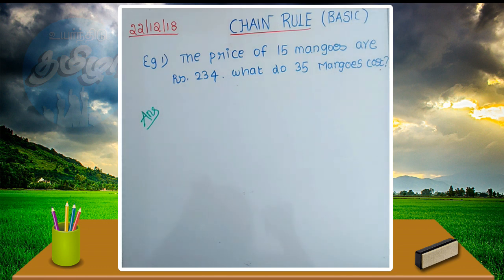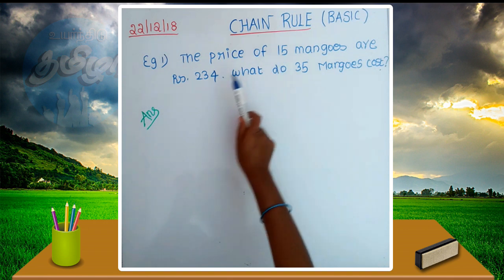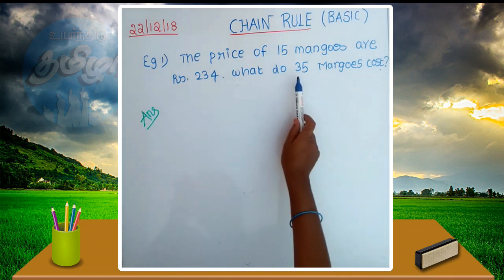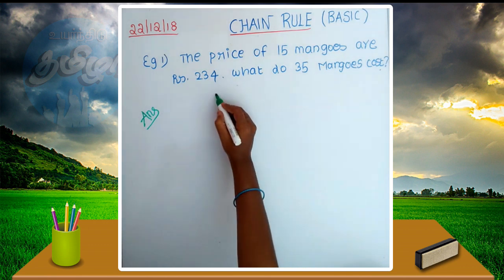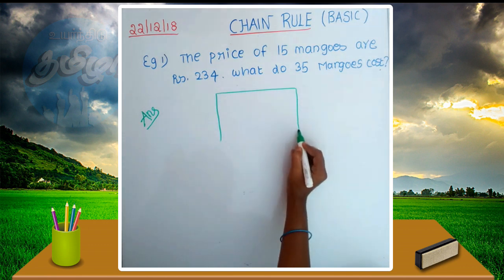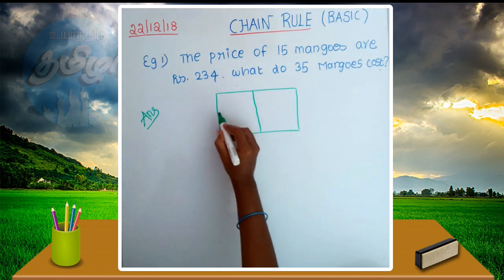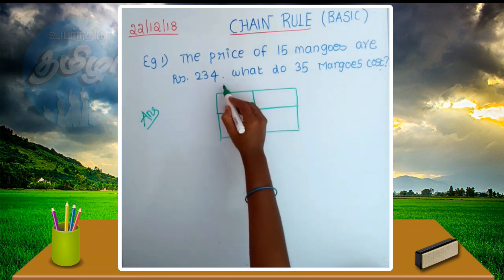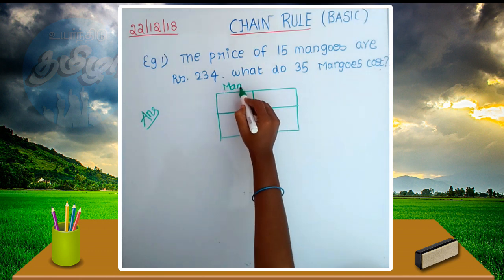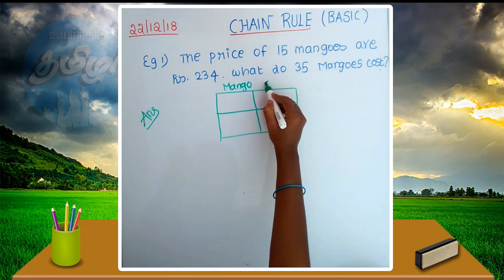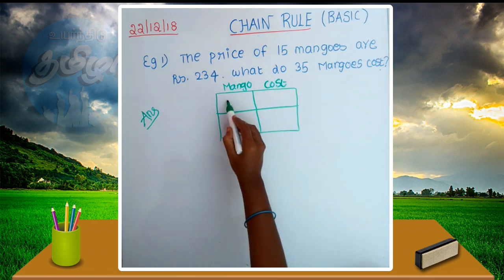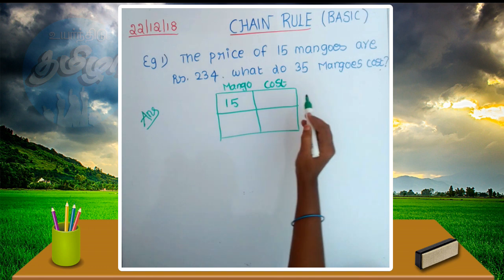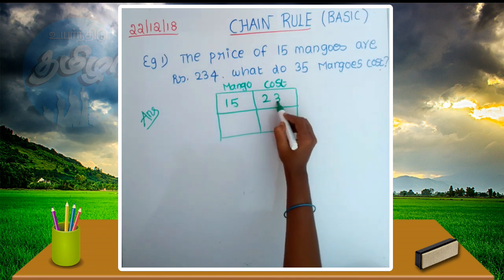Okay friends, now let's see example one. Here, 15 mangos cost 234. Then 35 mangos are given. What do we follow with the chain rule? First, we have a table. The quantity is 15 mangos, the cost is 234. In this situation we choose 35 mangos.